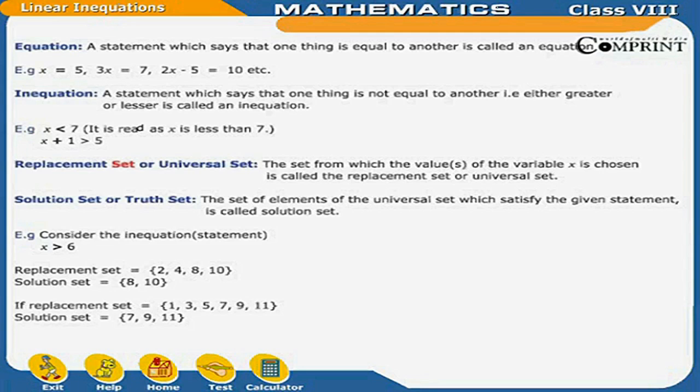An inequation is a statement which says that one thing is not equal to another — that is, either greater or lesser — and is called an inequation. For example, x is less than 7, or x plus 1 is greater than 5.